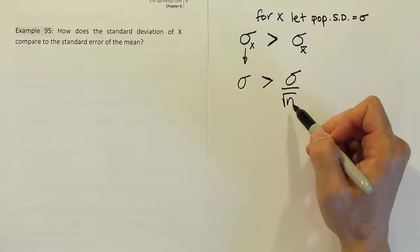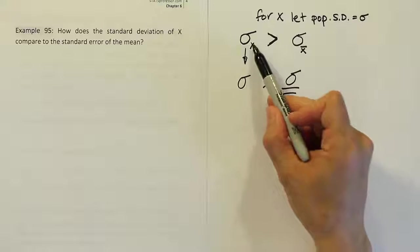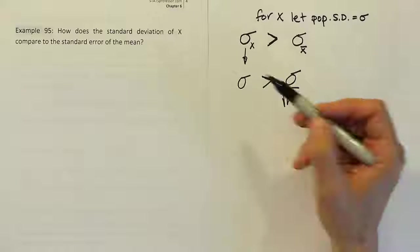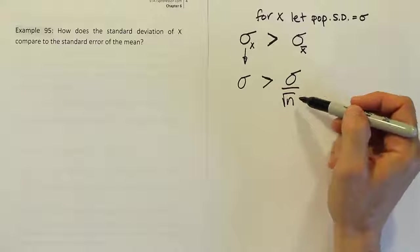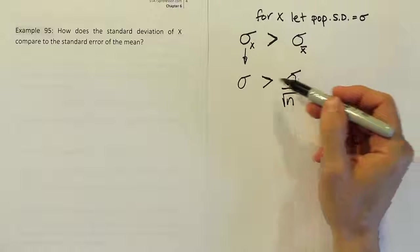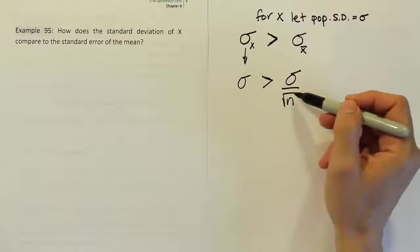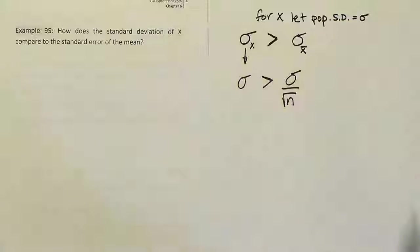It'll always be true as long as n is 2 or higher. Of course if you take a sample of 1, you're not really taking a sample—you're just looking at an individual x value. But anytime n is 2 or more, this quantity will be smaller than that quantity because you'll be dividing this σ by some positive number here.